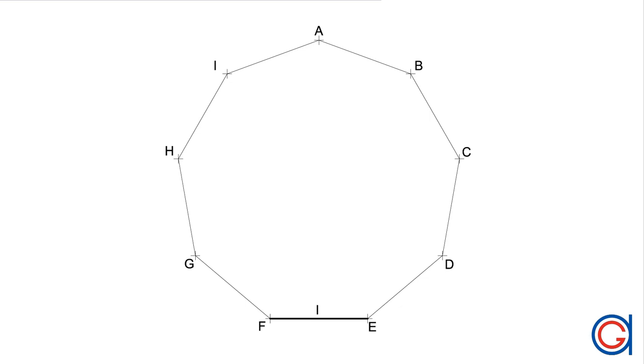One method is by knowing the length of one side. Click this link and it will give you a full description on how to draw it. And the second method is drawing a nonagon inscribed in a given circle. Click this link and it will give you a full description on how to draw it.